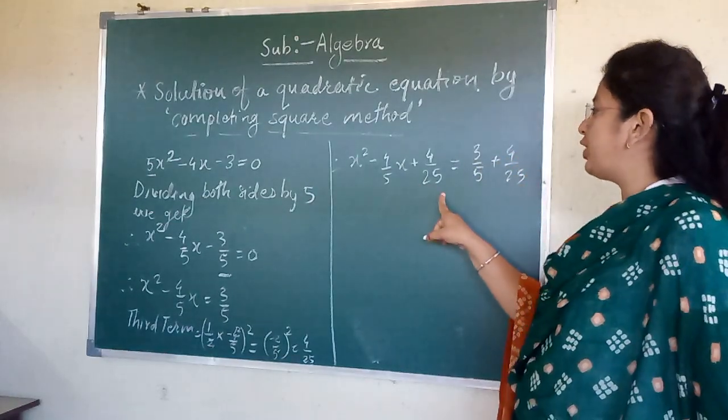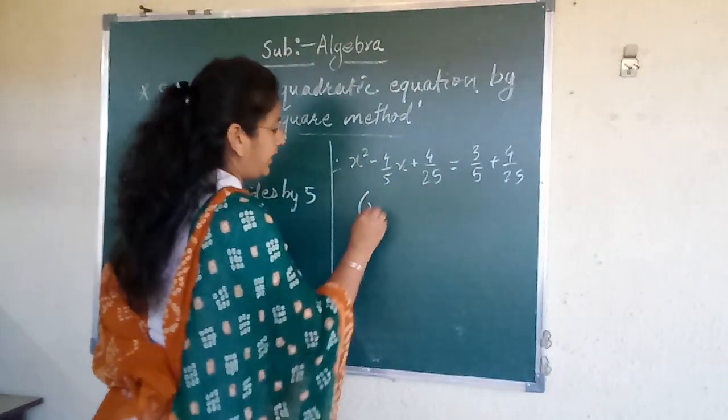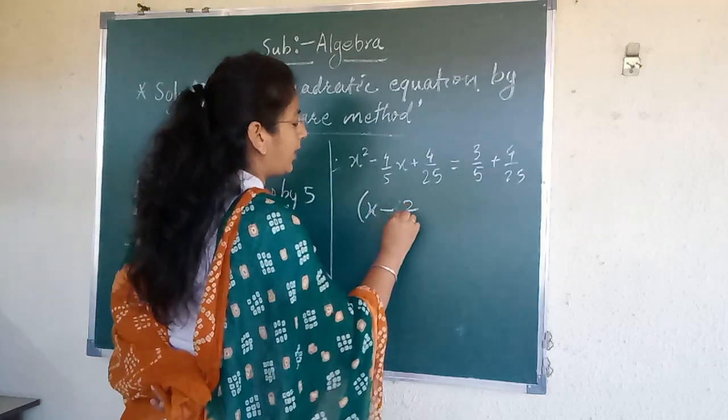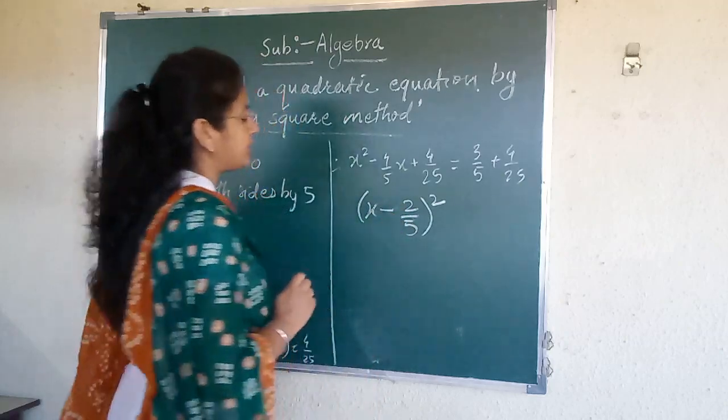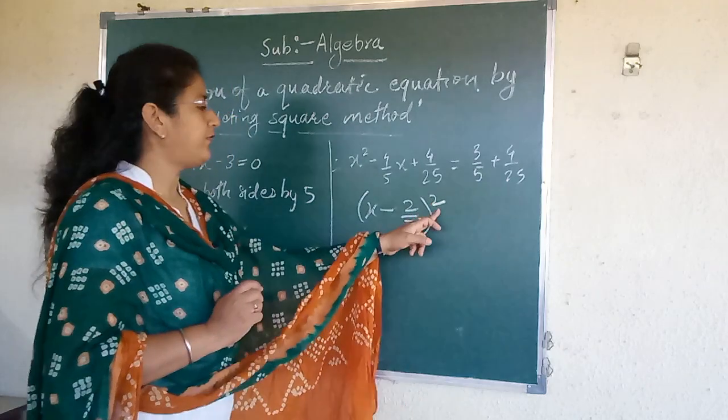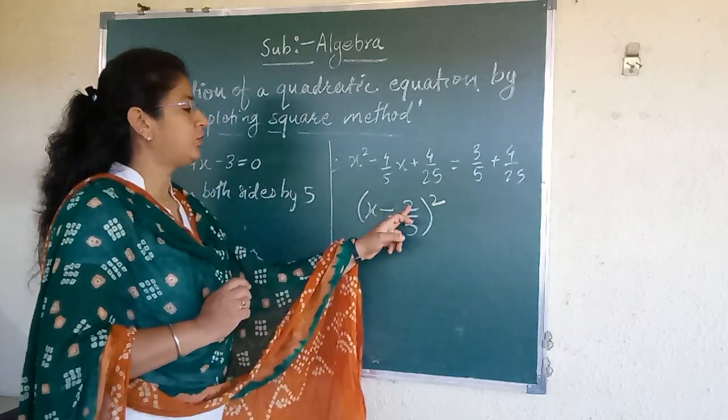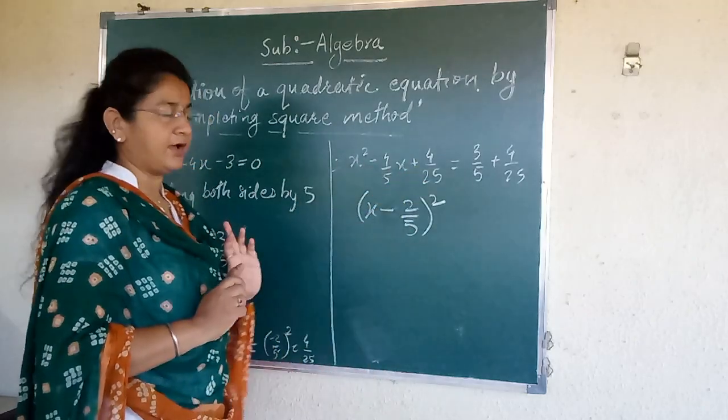Now it is the expansion of which bracket? (x - 2/5)². This is the expansion of x - 2/5 bracket square. Suppose we will expand, see what we will get: x², 2 into x into 2/5, that is -4/5x, plus 4/25.